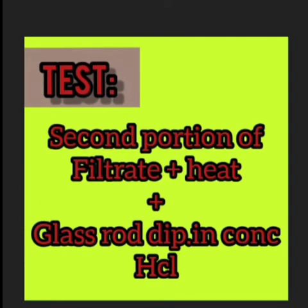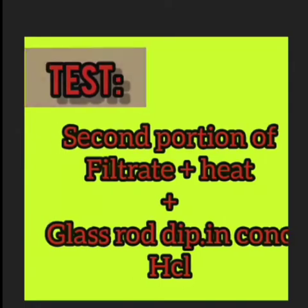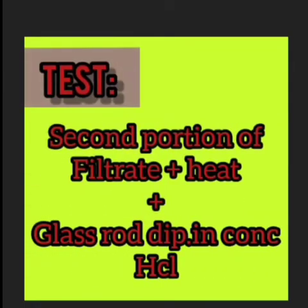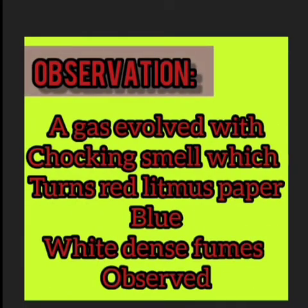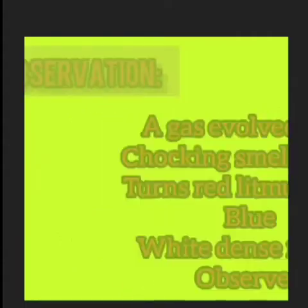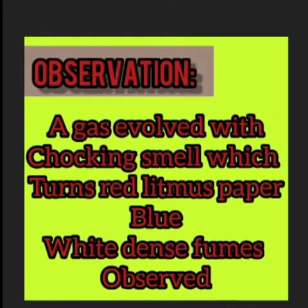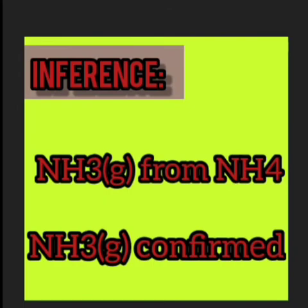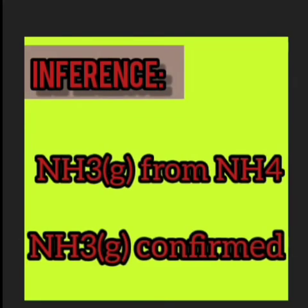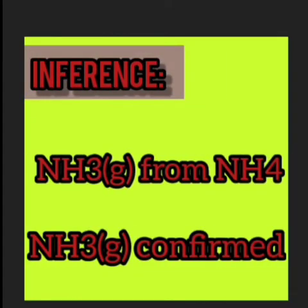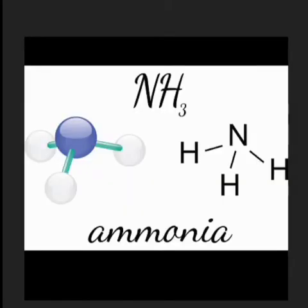For the third test, add the second portion of the filtrate and apply heat. For your observation: a gas is evolved with a choking smell, which turns red litmus paper blue. If it turns red litmus paper blue, it means the gas is alkaline. Ammonia has a choking smell, so this confirms that the gas is ammonia, evolved from ammonium ions.